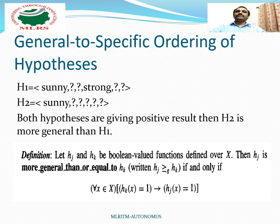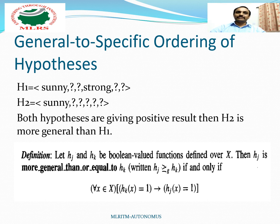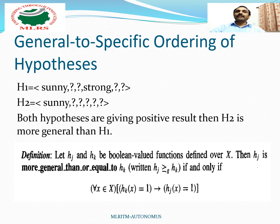To explain this, we take two hypotheses, H1 and H2. Attribute values for H1 are: sunny, ?, ?, strong, ?, ?. Attribute values for H2 are: sunny, and all remaining are question marks. Both hypotheses give a positive result. The difference is in the wind attribute — H1 gives a positive value only if wind is strong, while H2 gives a positive value whether wind is strong or weak. So we can consider H2 is more general than H1.